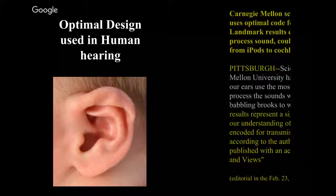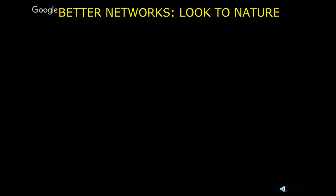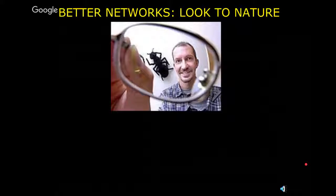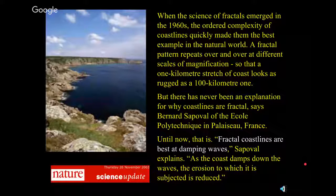On optimal design in human hearing: Carnegie Mellon scientists showed the brain uses an optimal code for sound. They discovered our ears use the most efficient way to process the sounds we hear, from babbling brooks to wailing babies. You want a better network? Check out ants. Put a bunch of ants on a task to get something from point A to point B — they'll find the most efficient way to get there.